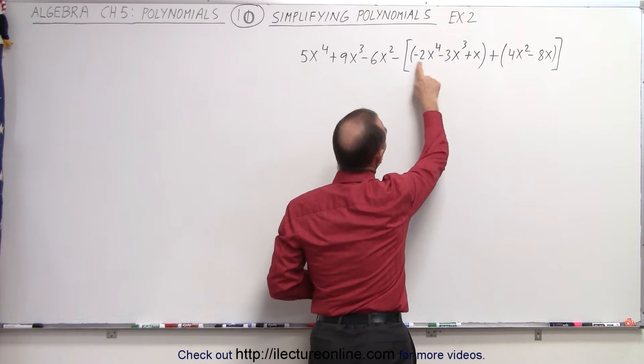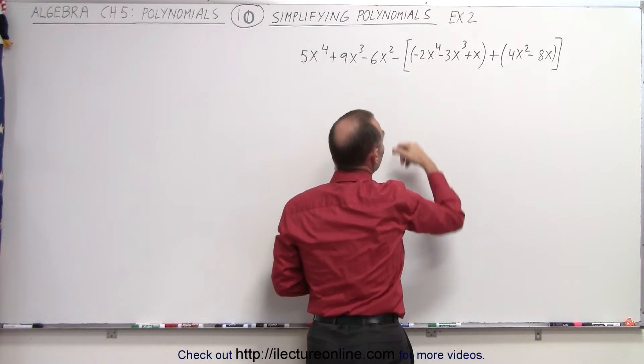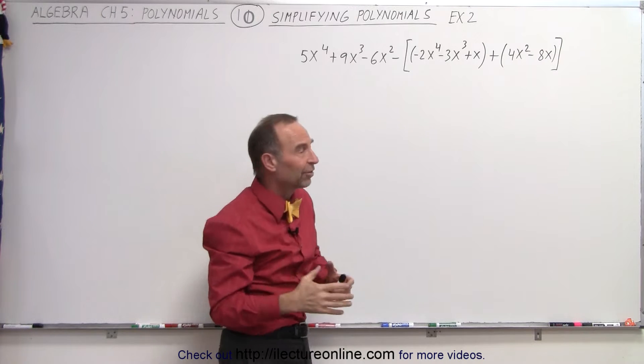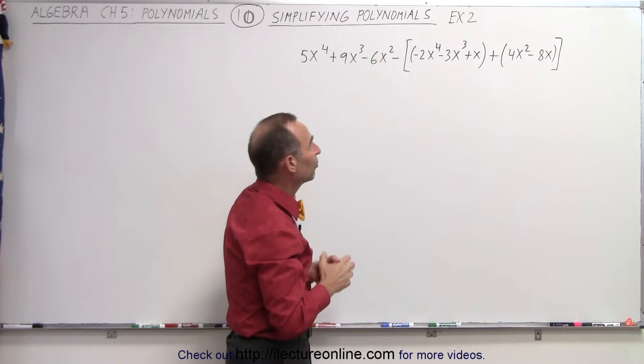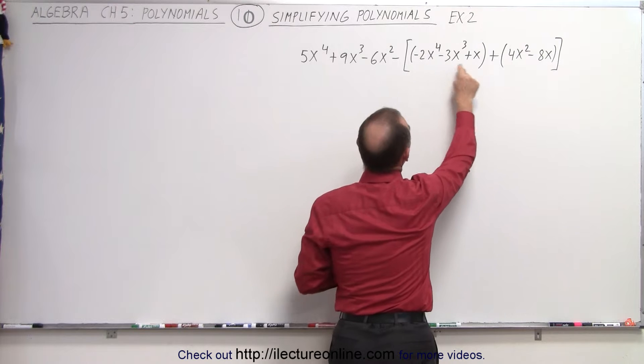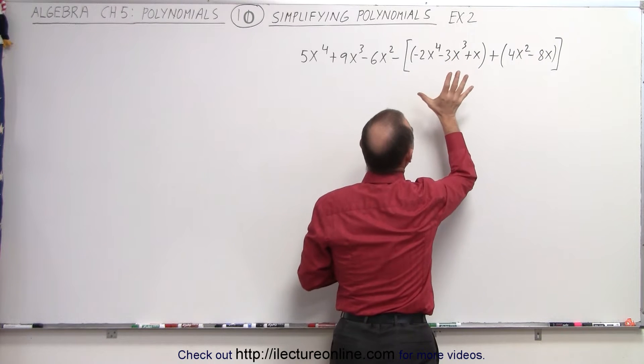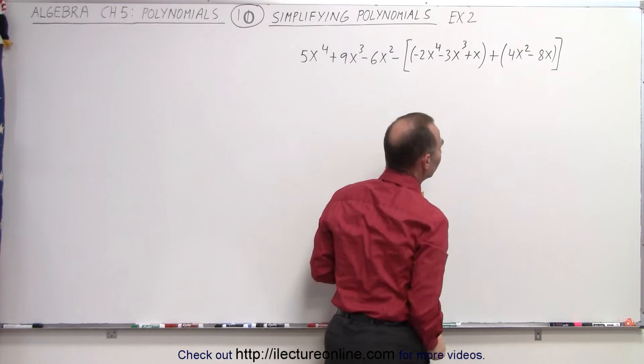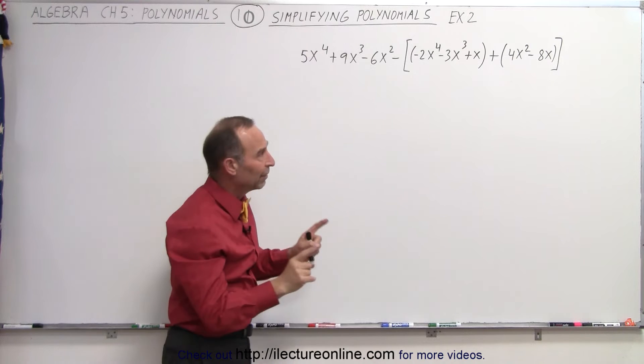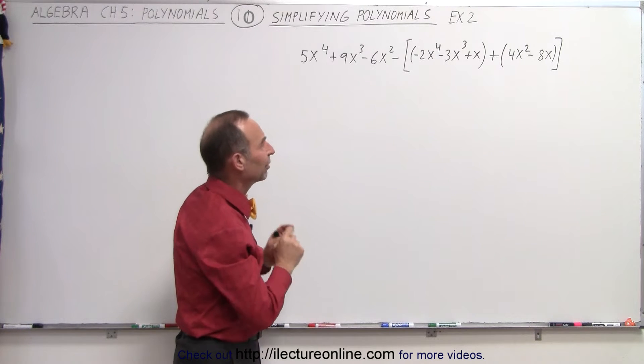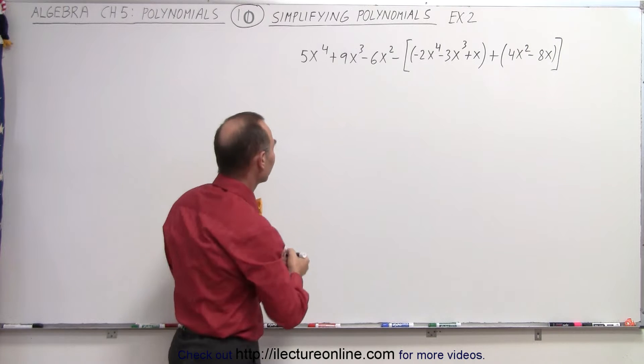On the left side here, notice we don't have anything in front of it. That means it implies a positive sign. We don't have to write it, and so therefore again we can simply remove these parentheses without doing anything, just simply remove them and leave everything else the same. We can only do that if there's a positive sign in front of the parentheses. So let's go ahead and do that first.